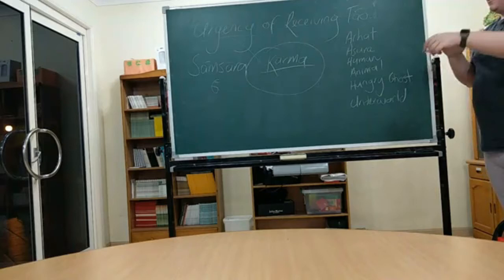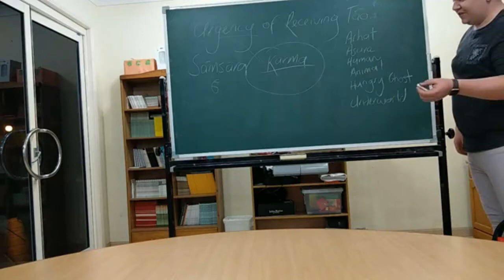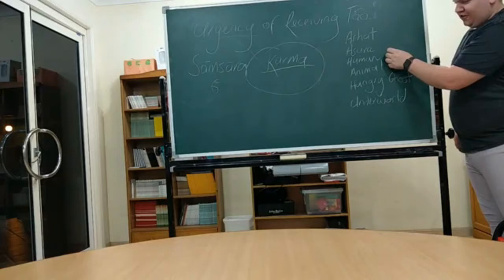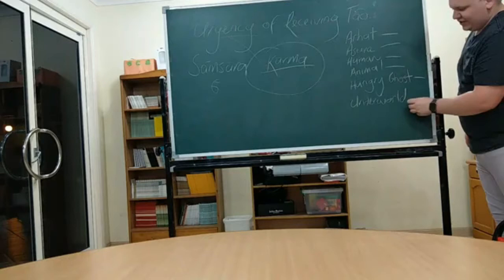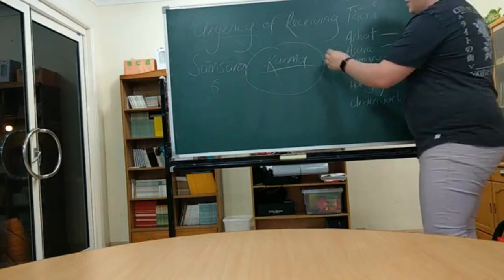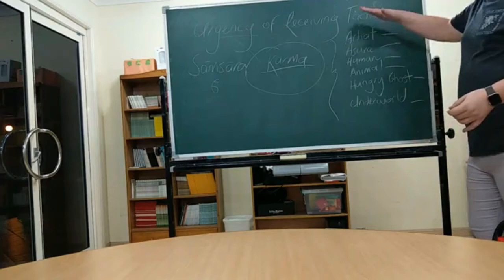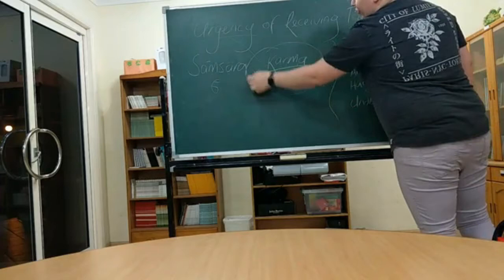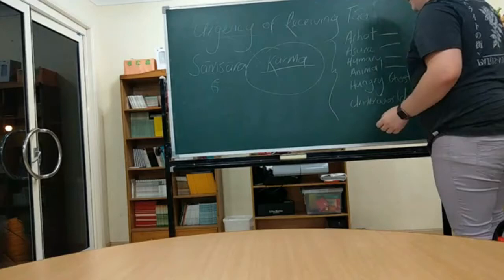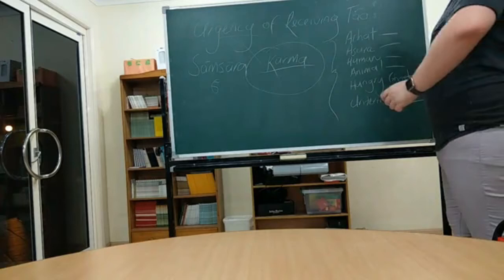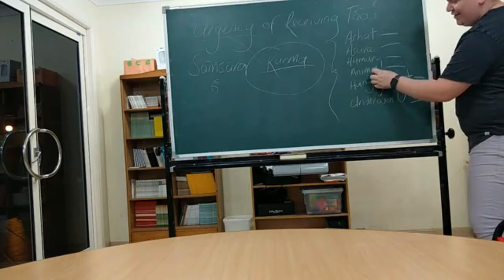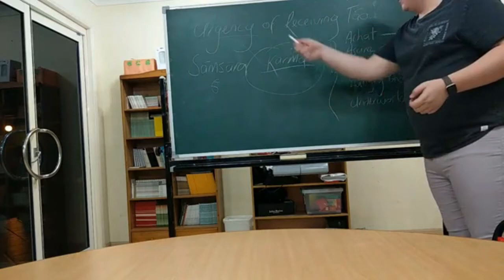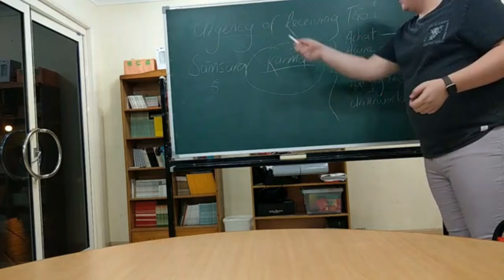So, there are the three positive pathways and three negative pathways. So, the positive ones are human, Arhat and Asura. And then the three negatives are the animal, hungry ghost, and the underworld realms. So, by receiving Dao, it allows us to essentially bypass these realms, and prevent us from having to constantly go in a circle.